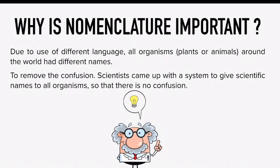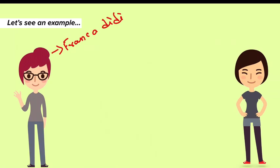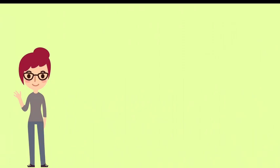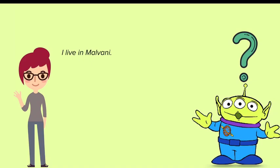Let's see an example of why nomenclature was important. Suppose there is a girl named Franka. She has a friend, and both live in Mumbai. Her friend asks where she lives, and she replies 'I live in Malvani.' Since both live in Mumbai, her friend knows where Malvani is. But suppose Franka has an alien friend from a different planet, and the alien wants to know where she lives. She replies 'I live in Malvani,' and the alien will be very confused — because where is Malvani?